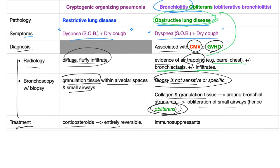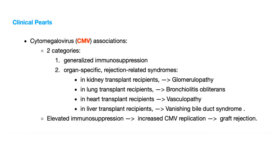Treatment: corticosteroids for COP — it's entirely reversible. Bronchiolitis obliterans also responds to immunosuppressants such as corticosteroids. Clinical pearls: CMV virus is associated with two main categories — generalized or localized. Generalized: immunosuppression — people who are immunosuppressed are more likely to get CMV infection. Or organ-specific, especially rejection-related.